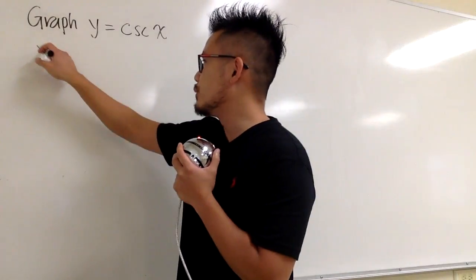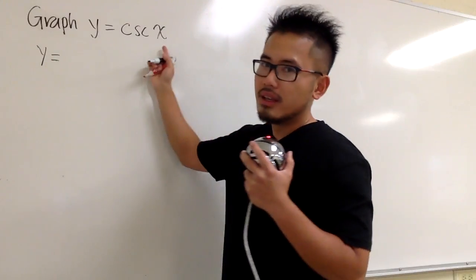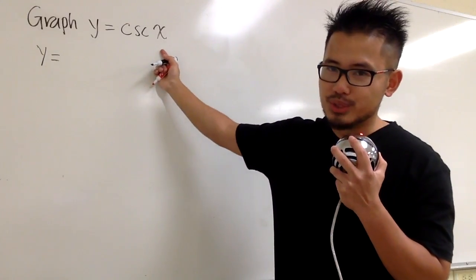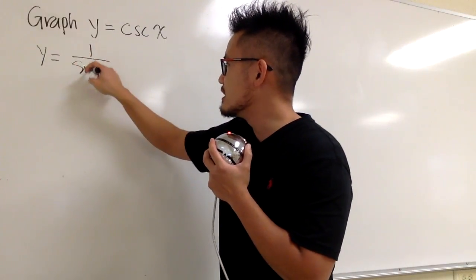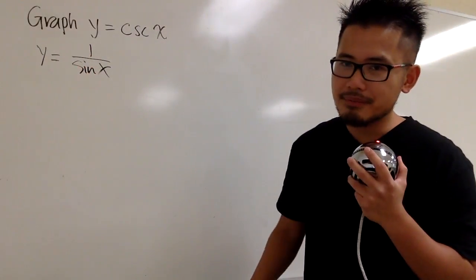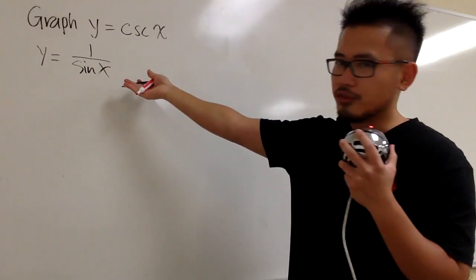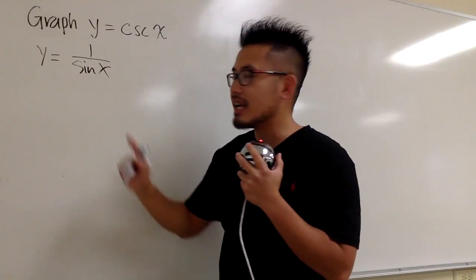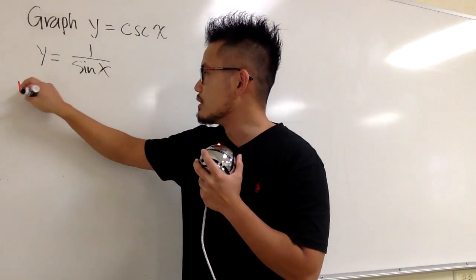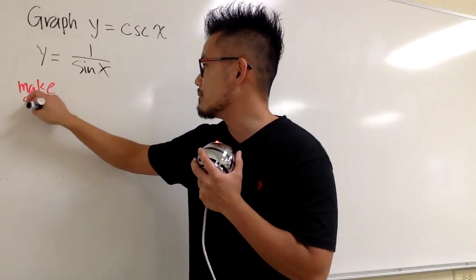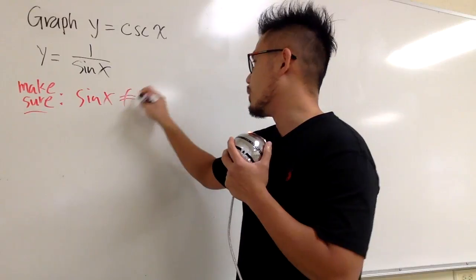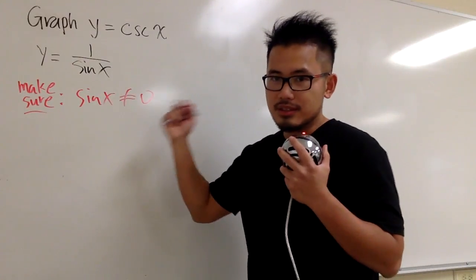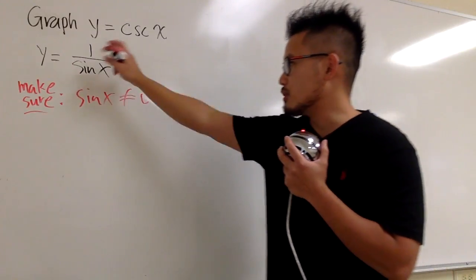To do so, we are going to look at this equation as y equals, and this is what we have to remember really well. Cosecant x is the same as 1 over sine x. So you see we end up with a fraction, therefore we have to make sure that the denominator is not equal to 0 for the domain.